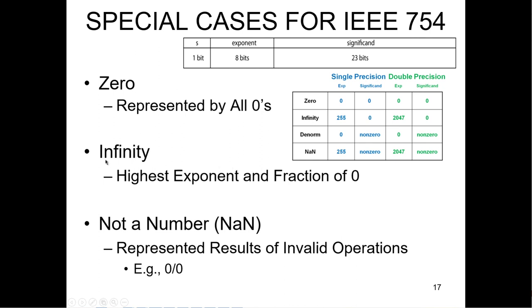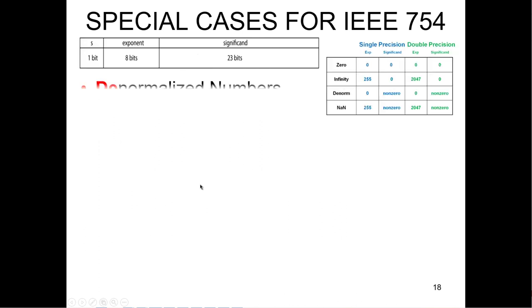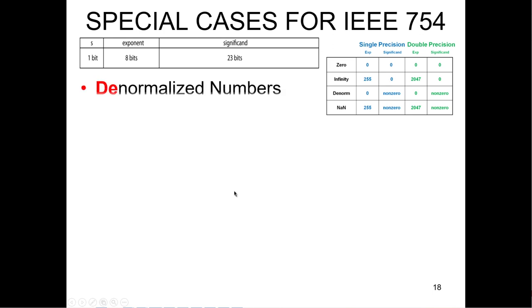Infinity can be plus or minus because there's still a sign bit. You can have plus or minus zero, but we'd normally never use minus zero. Not-a-number represents an invalid operation, like divide by zero or other things.